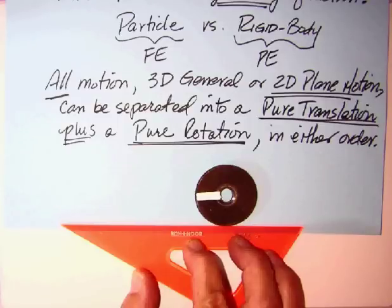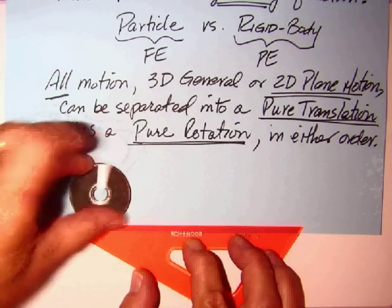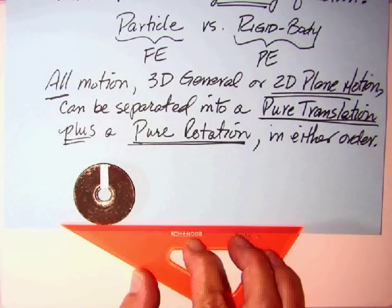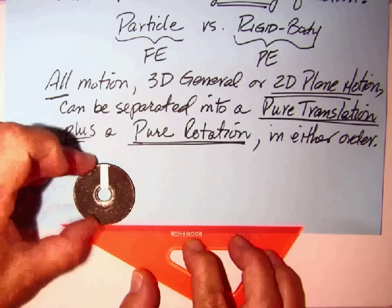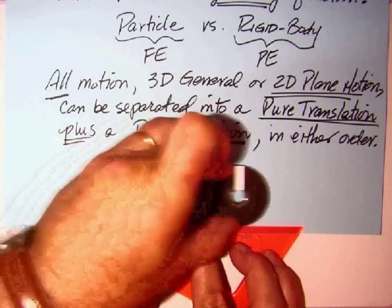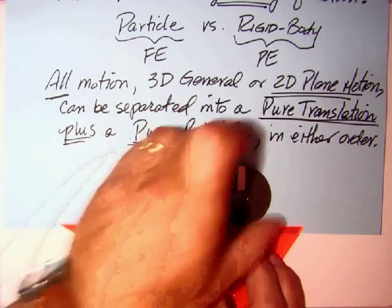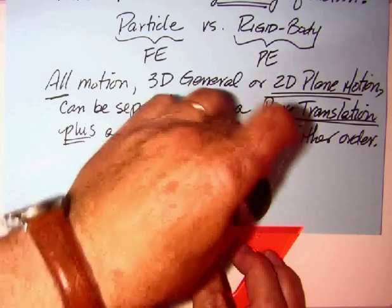But what we can think of it as is we can think of, if we looked at a pure translation first, then we could say I can just move it to here, and then that's our translation, and then do our rotation, and we get the same result.